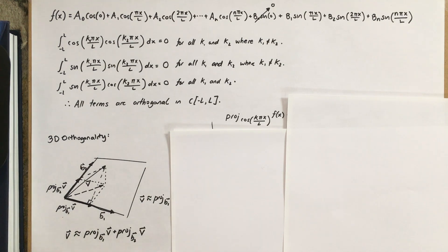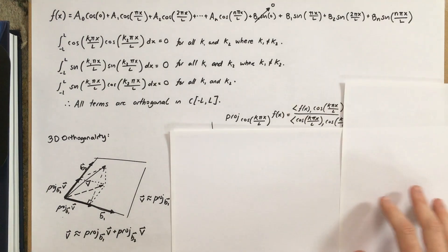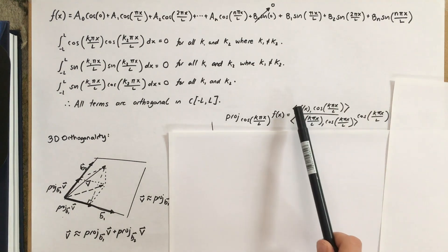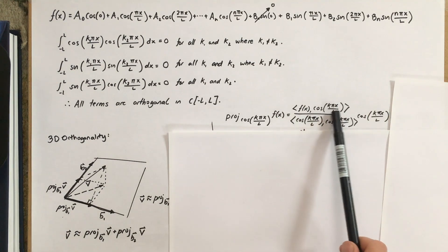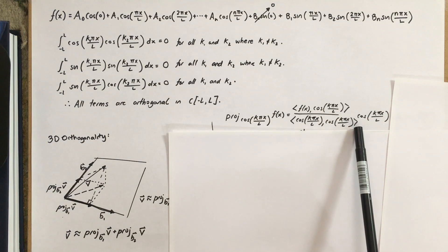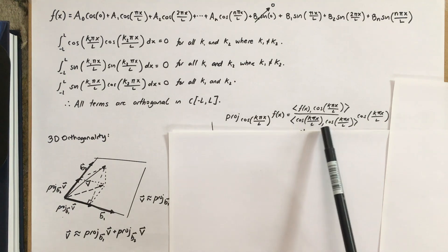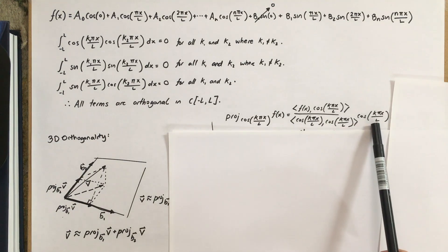And we can use the projection formula to get the amount of cosine k pi x over L that makes up f. Again, this is not possible to visualize, you just have to trust that when we take up the dimensions, these things still work. So, we can run this formula, and we will get the inner product of f of x and cosine k pi x over L over the inner product of cosine k pi x over L with itself, times cosine k pi x over L. That is the projection formula that we've learned in class before.